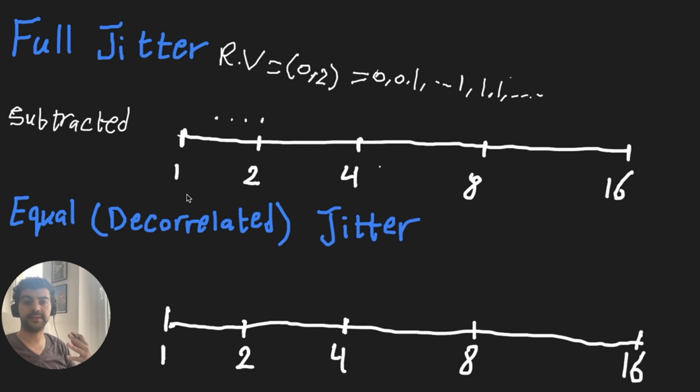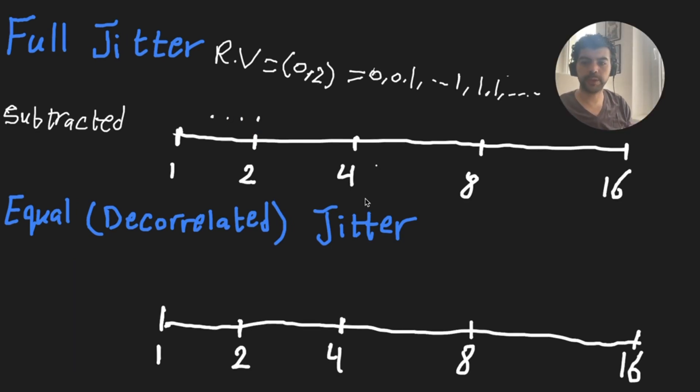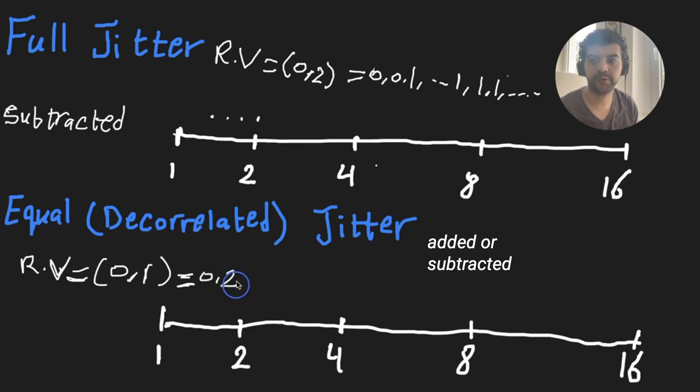For the equal or decorrelated jitter, we do the same by calculating a random value between zero and the wait time. The difference is we either add this random value to the wait time or subtract it. Then we either add it to the wait time, which could be 1.2 seconds, or 0.8 seconds, and then we track the request.